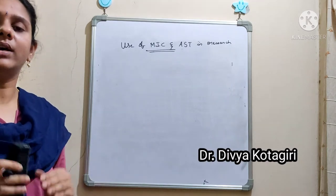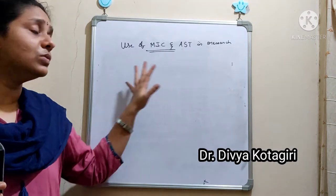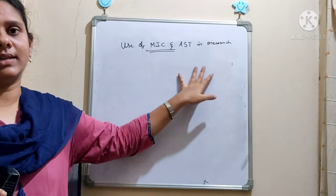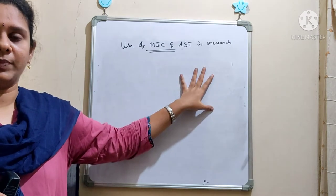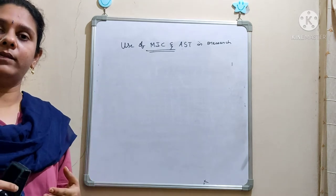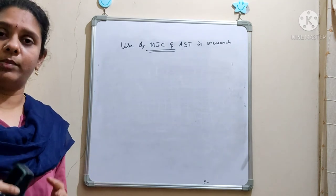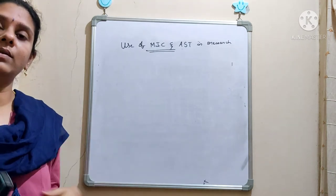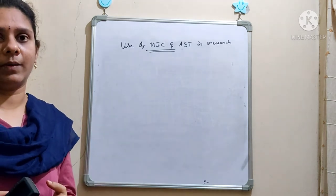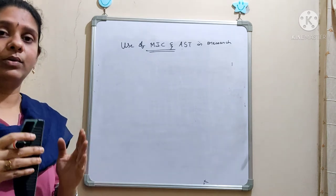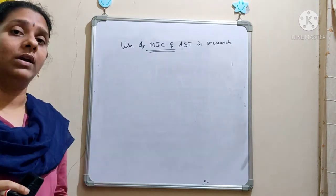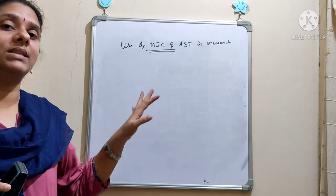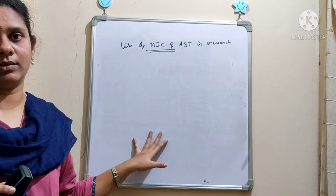Hello everyone. In this video we are going to discuss the use of two important techniques — MIC and AST — in the field of research. In earlier videos I have told you how to perform the test and what is the importance of the test. By using both these methods we can find out the efficacy of the drug, that is whether the drug is going to inhibit the growth of the organism or not, so that we can easily make out whether the microorganism is sensitive or resistant to the drug.